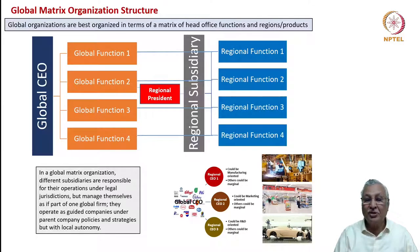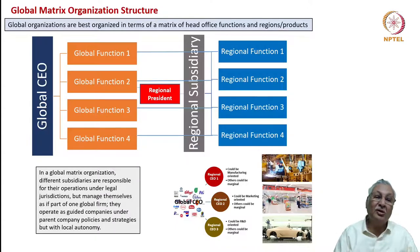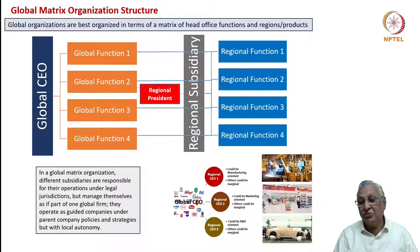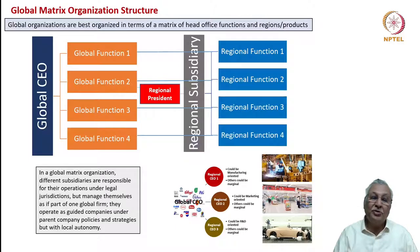Multinational corporations have several regional CEOs. Depending on whether the regional entity is manufacturing-oriented, development-oriented, or marketing-oriented, there is a particular organization structure. If the regional entity is highly manufacturing-oriented, the regional CEO reports to the global head of operations. If primarily marketing, the CEO reports to the global marketing head. If R&D-oriented, the regional CEO reports to the Chief Scientific Officer at the global level.